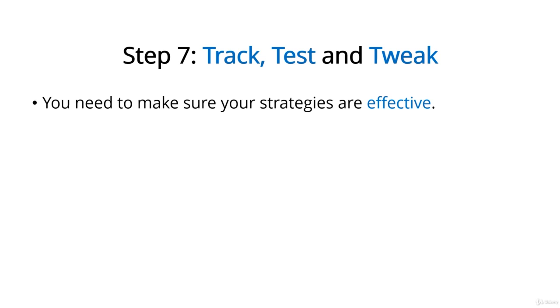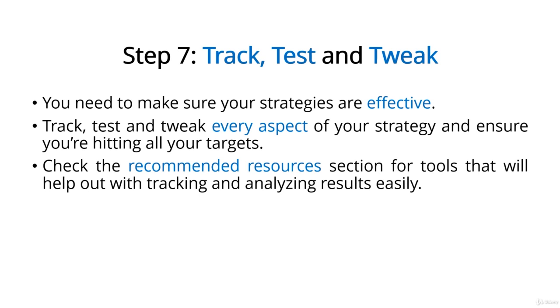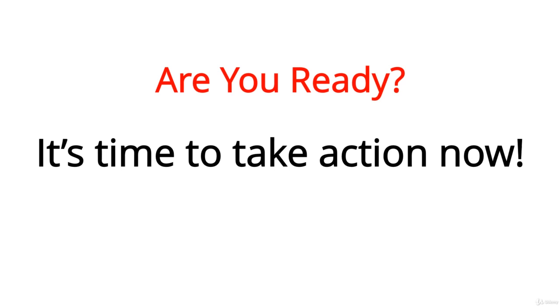Finally, Step 7: Track, Test, and Tweak. You've created both a content strategy and a strategy for growing your platforms — now make sure your strategies are working. Track, test, and tweak everything to be sure you're hitting your targets. Check the resources section to get tools that let you track and analyze your results easily. You've got a plan in hand and the complete details of how to implement it inside this guide. So now it's time to take action — not tomorrow, not next week, but right now, while everything is fresh in your mind. Generating leads, growing your lists, boosting conversions, driving sales, building brand awareness — all of these benefits are yours for the taking. Roll up your sleeves, lay down your plans, and get ready for some great results.